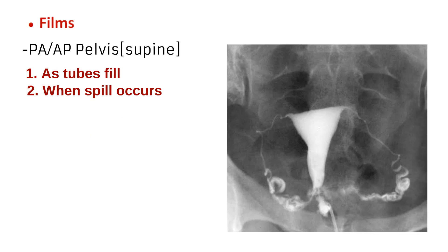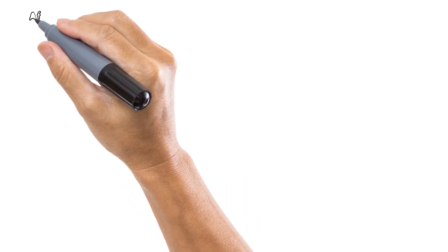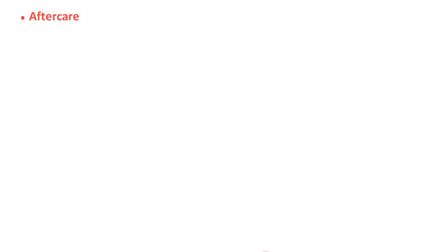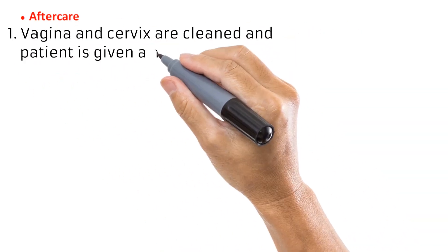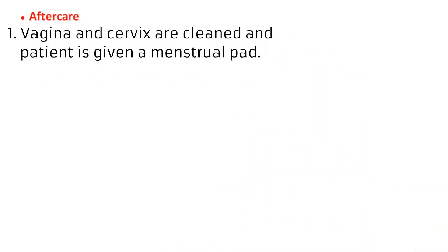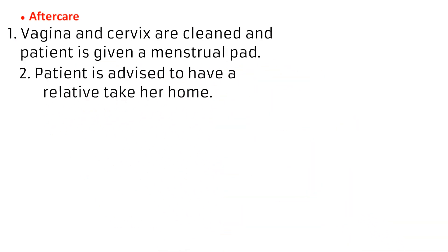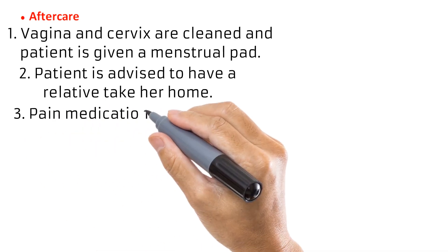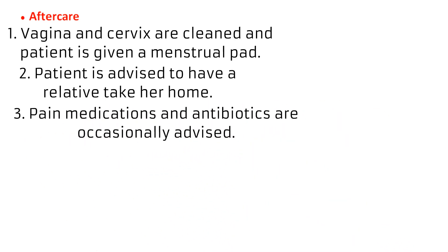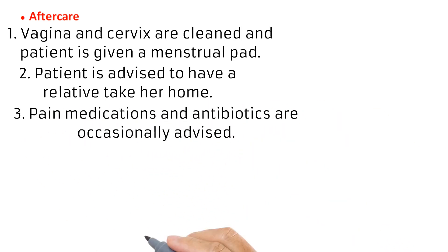Don't forget that one image is also taken as a control before starting the procedure, making at least three images total. After the exam, all equipment is removed, the area is cleaned, and the patient is handed a menstrual pad to absorb slight bleeding likely to occur. The patient is advised not to drive or go home alone. Occasionally, pain medications and antibiotics are advised.